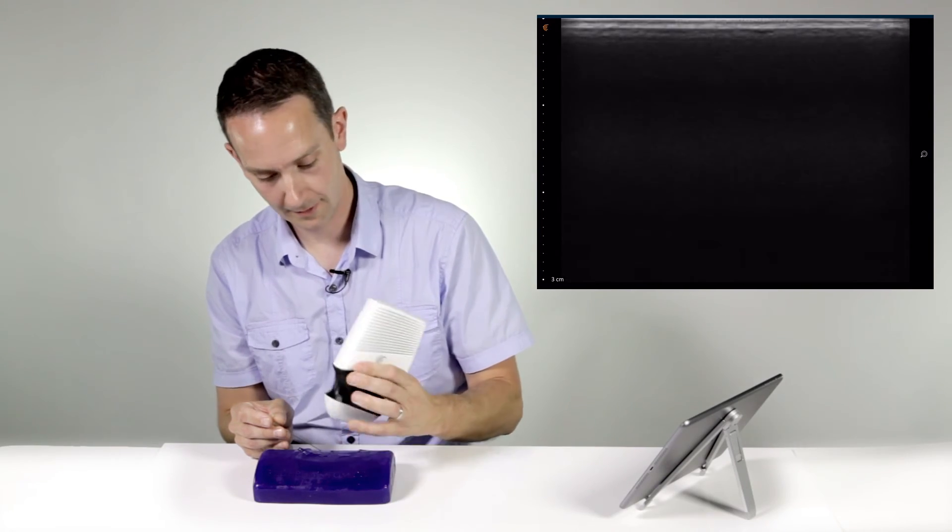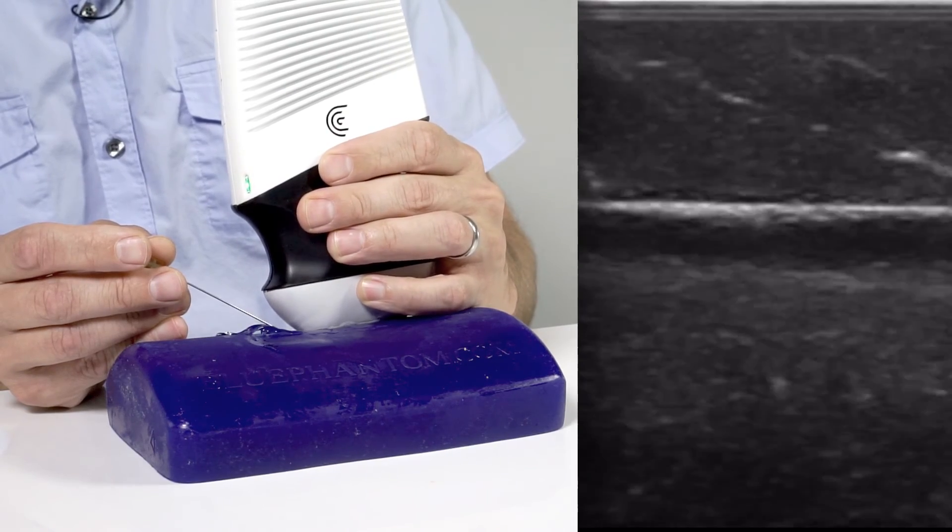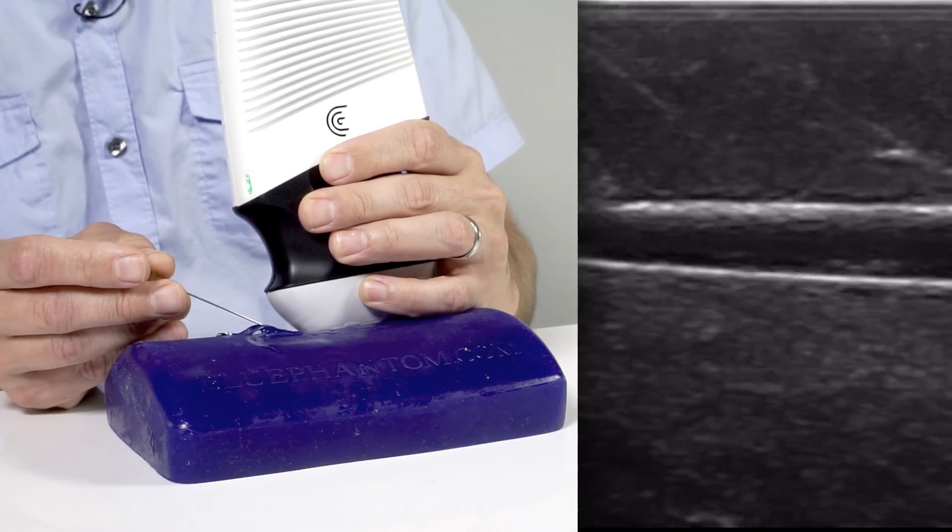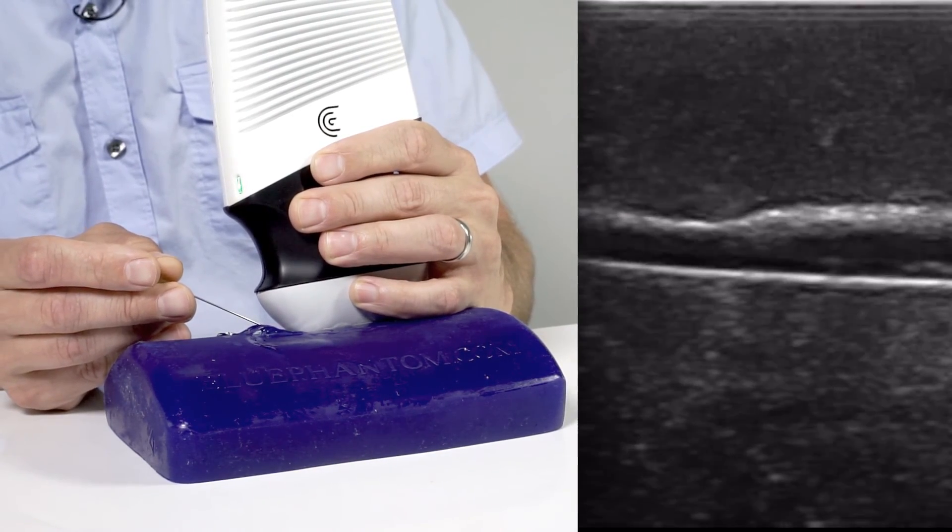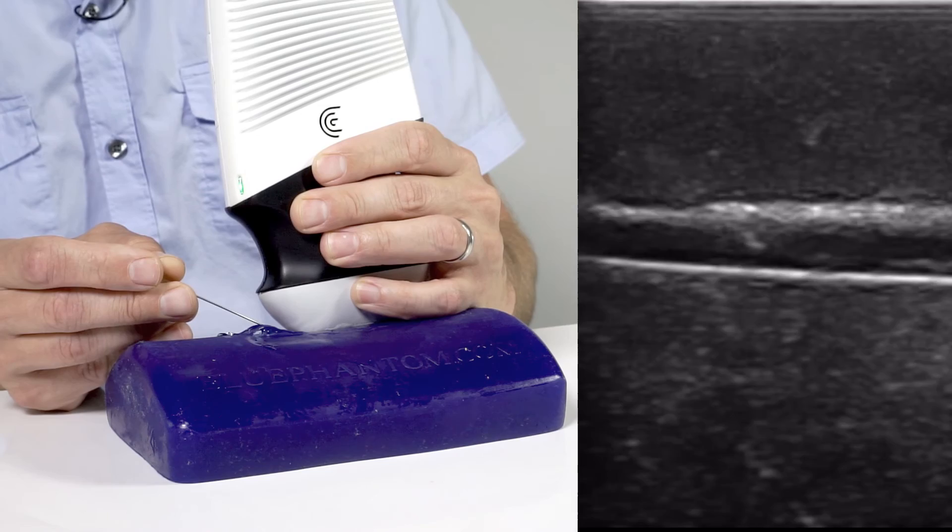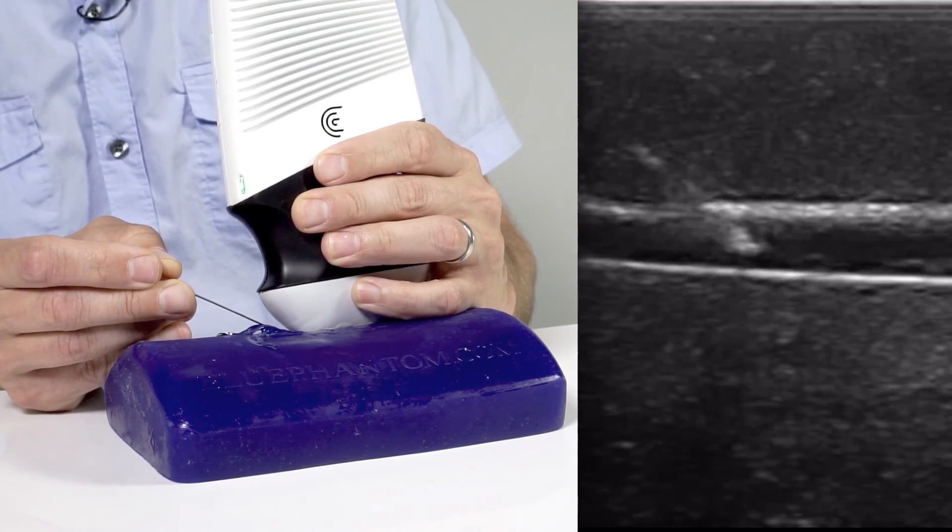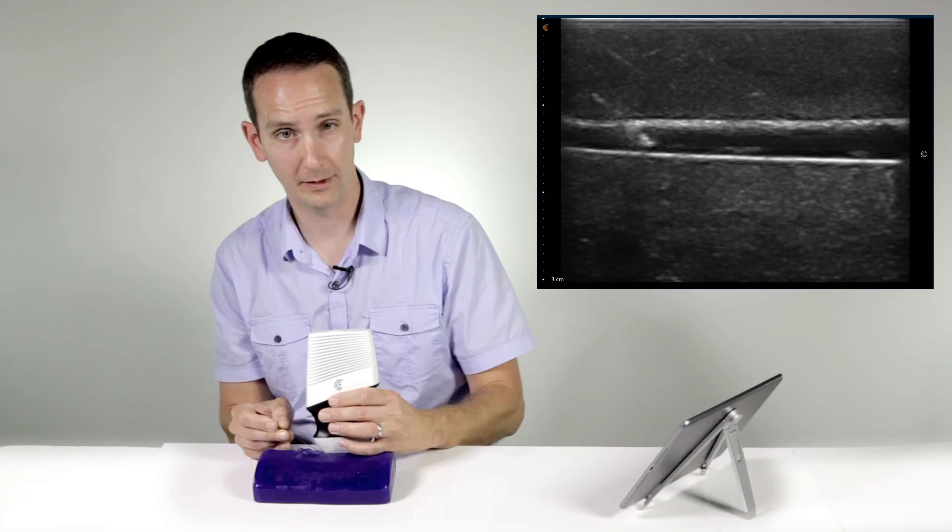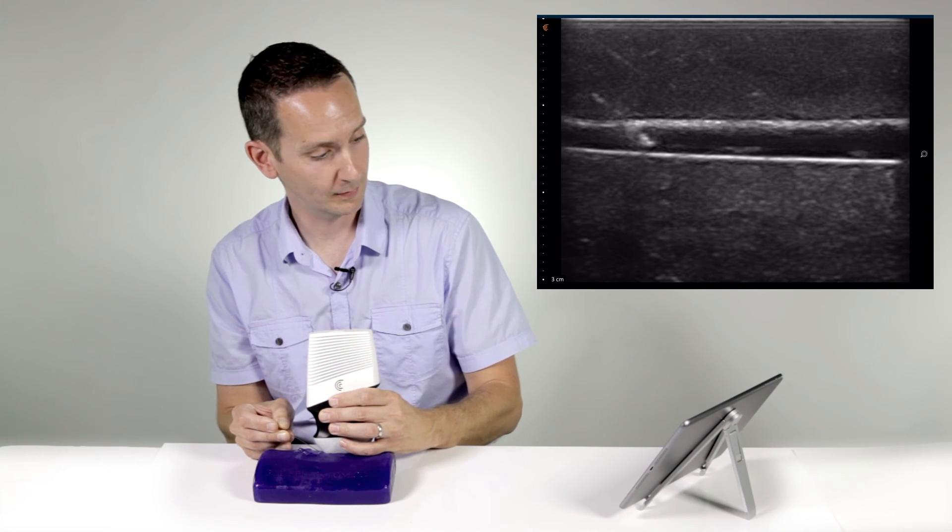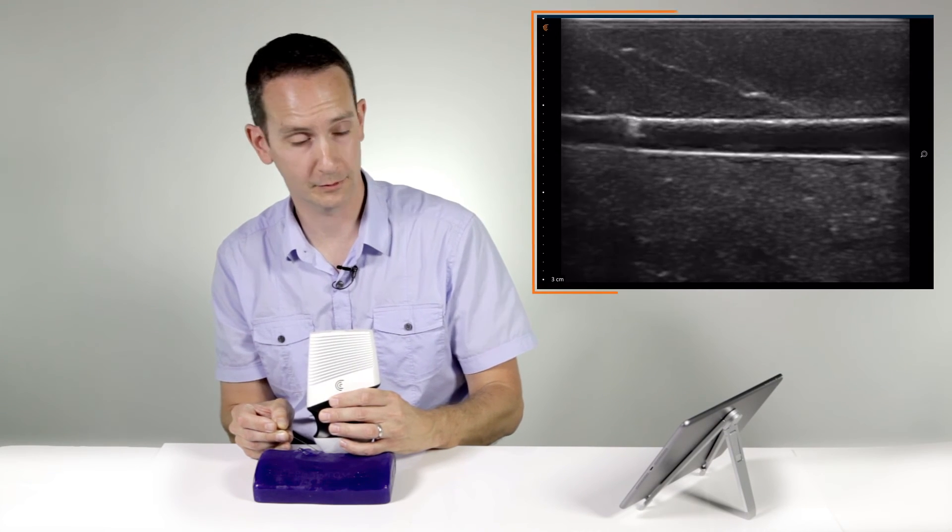Now I'm going to rotate into a long axis and I'm just going to advance the needle the last few millimeters until it enters the vessel. And this way you can ensure that in fact the needle tip is in the vessel and it's not gone beyond the plane of the ultrasound beam.